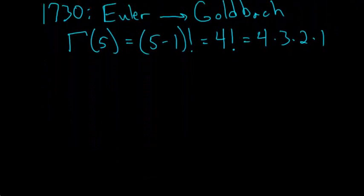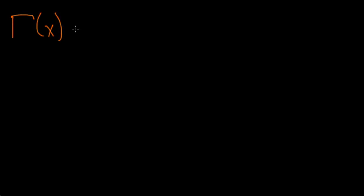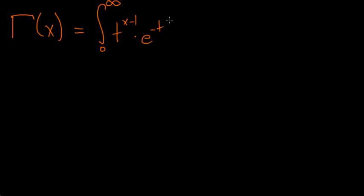If we go down here where we have some more space to work, the gamma function — I'll rewrite it for you — is equal to the integral from 0 to infinity of t to the x minus 1, multiplied by e to the minus t, dt. To evaluate this integral, we need to use integration by parts. The formula for integration by parts comes from the product rule for derivatives, so if we start with that, it's fairly easy to re-derive the formula.